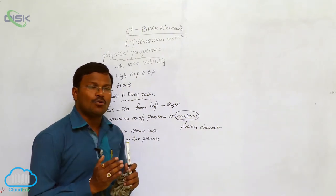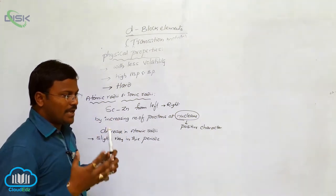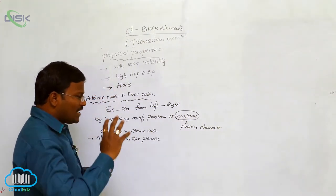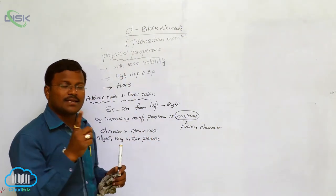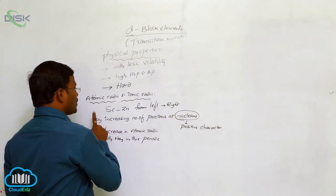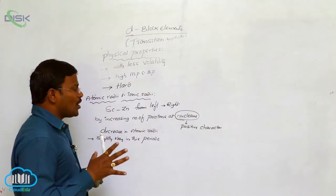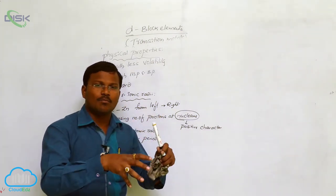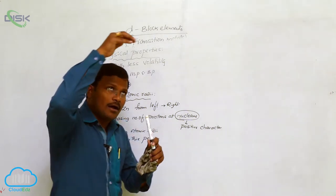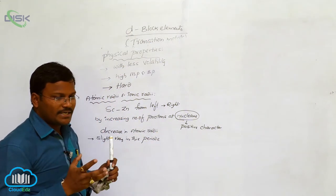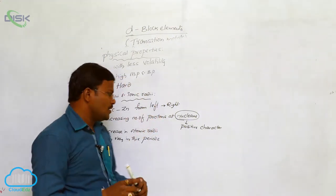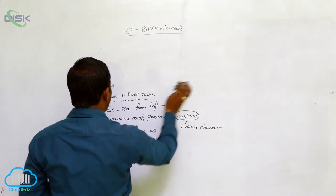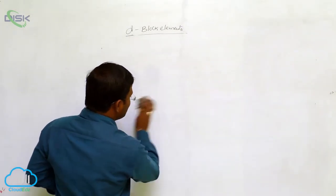When an electron is eliminated from the valency orbit, positive ions are generated — neutral atoms are converted into positive ions. When positive ions form, there is greater attraction by the nucleus onto the valency orbit, which facilitates a further decrease in ionic radii compared to atomic radii. This is the variation between atomic radii and ionic radii in D-block elements. The next topic is ionization enthalpies.